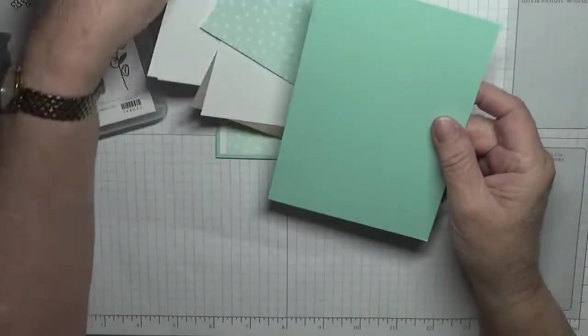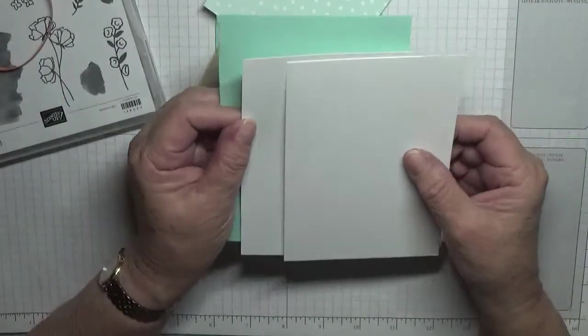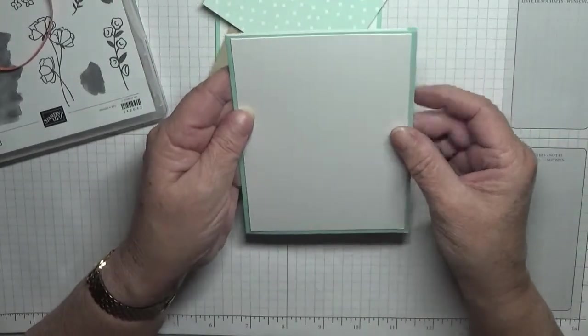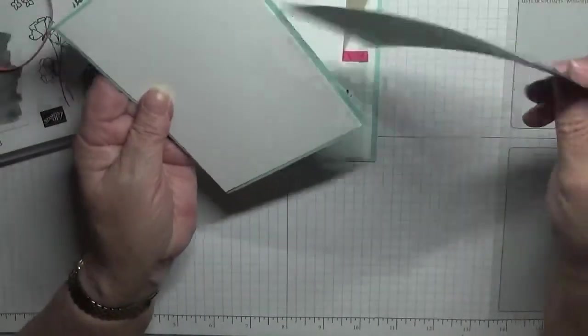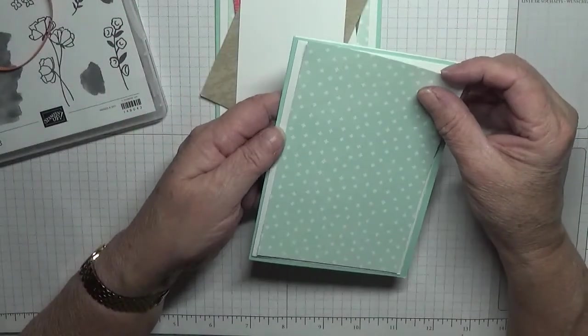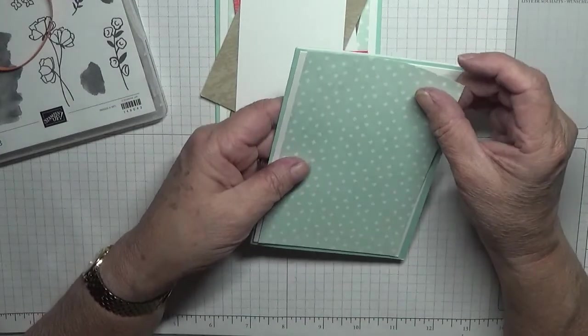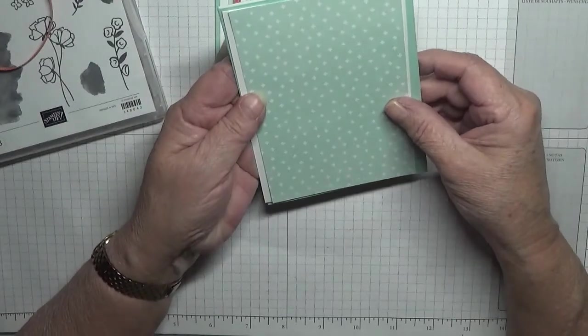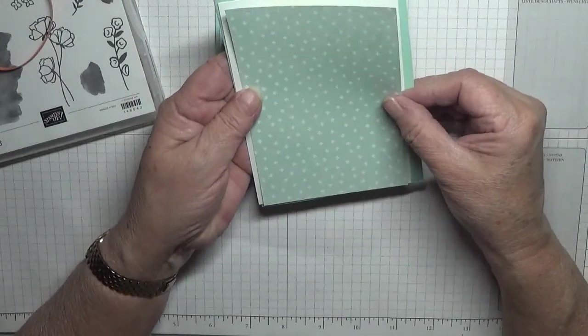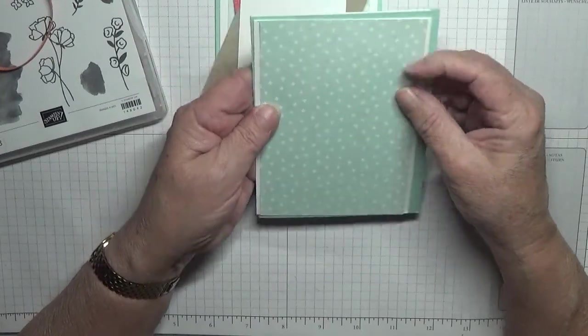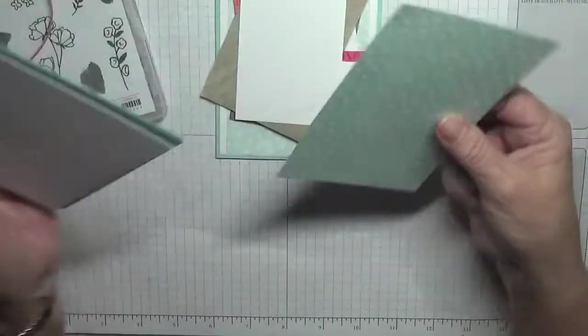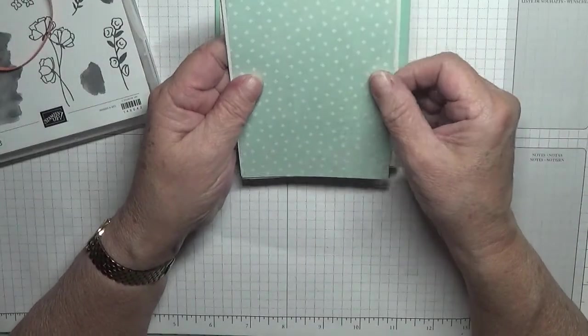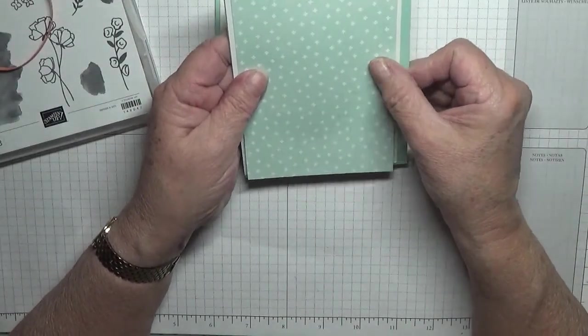I have two white cardstock pieces at 5 5/8 by 3 7/8, one for inside, one for the front. I have a piece of retired pool party paper. I don't know what pack it came from, I just found it's pool party, so I'm using it. And that measures 5 5/8 by 3 5/8, so there's a bigger border either side.